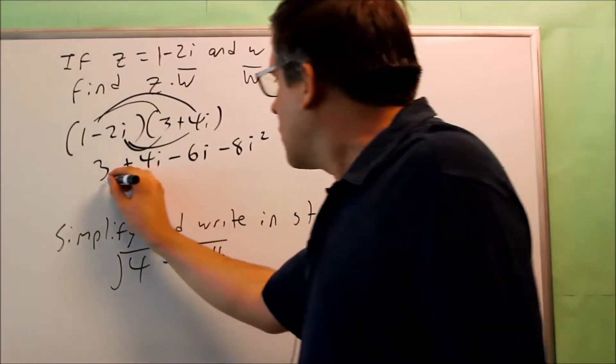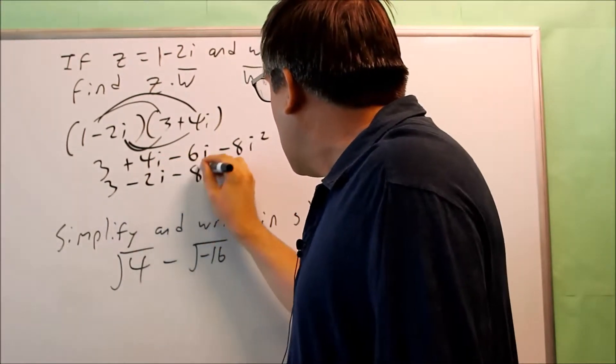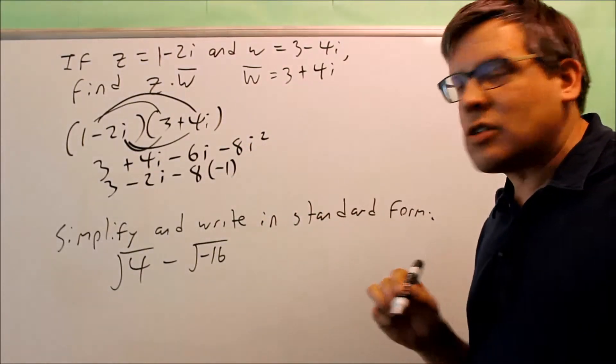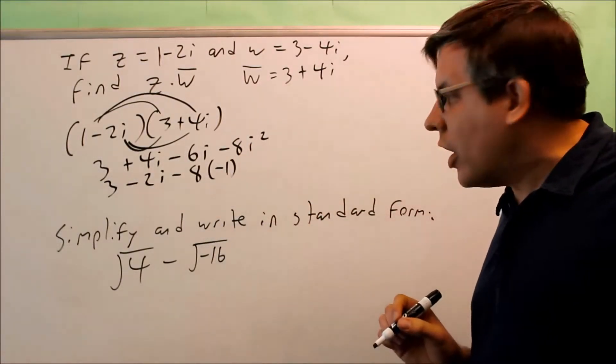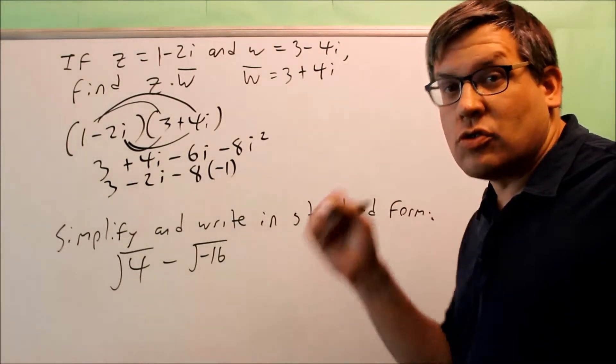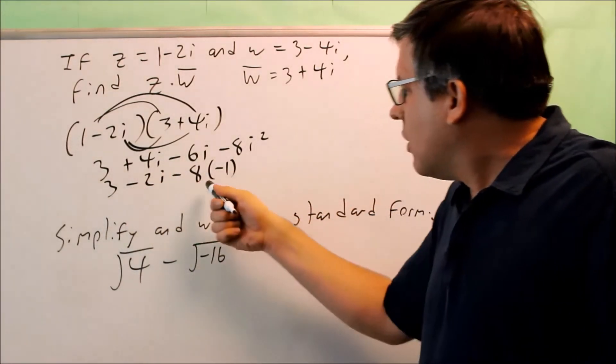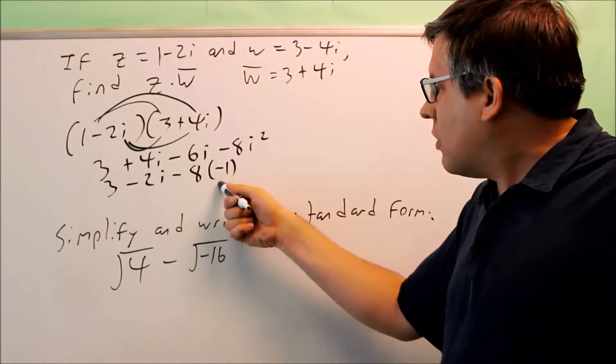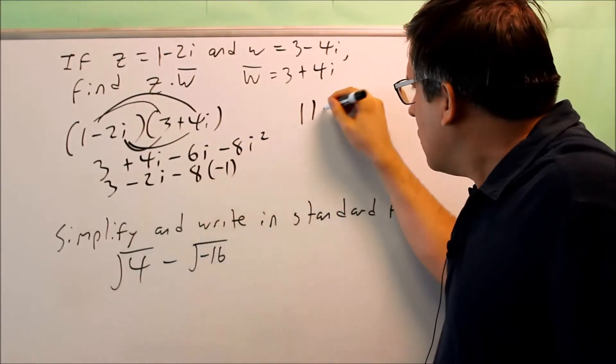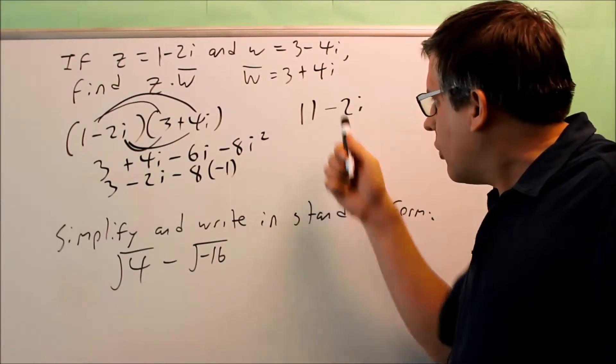Now we're going to simplify terms. We get 3. This 4 minus 6 is negative 2i. And whenever we have a problem that has i squared in it, anytime you see i squared, we're going to replace it with negative 1. That way we can further simplify this and put it in proper standard form, which is usually what they ask us to write this out as. This gives us 3. Negative negative is positive. That's really a plus 8. So that'll give us 11. And then I have minus 2i, which there's nothing else to do with that one. That would be proper standard form for the first one.